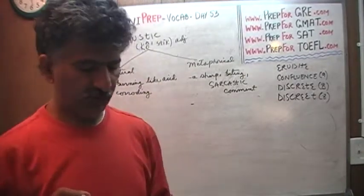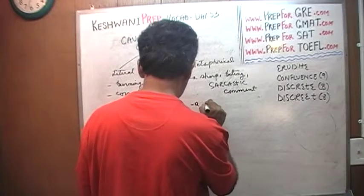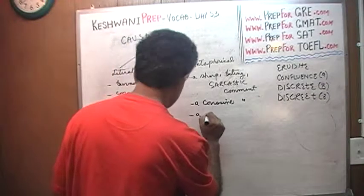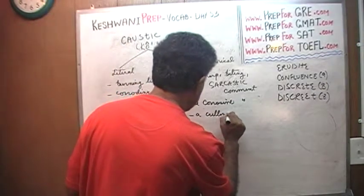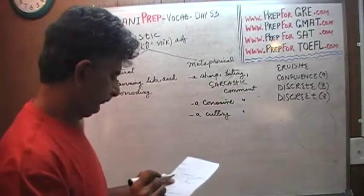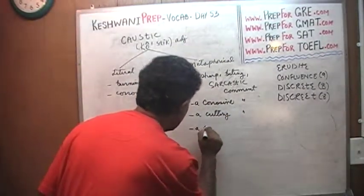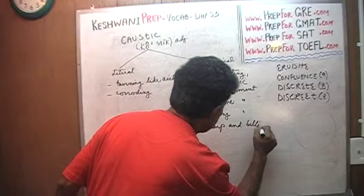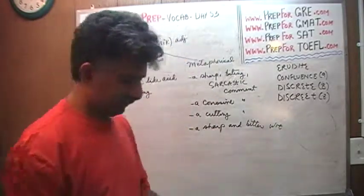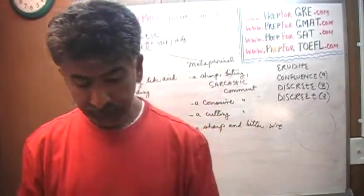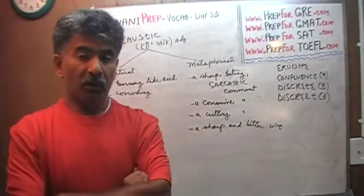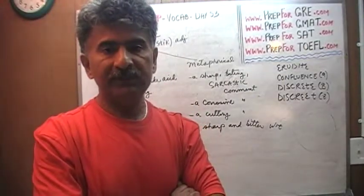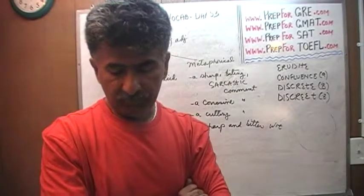A caustic comment is a corrosive comment, a cutting comment. It could also be a sharp and bitter wit. You might say something witty, but at the same time it is very caustic, very sarcastic — it burns the other person. The other person is not pleased by what you just said. Such a comment is called a caustic comment.